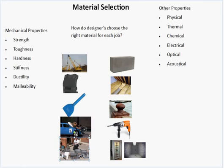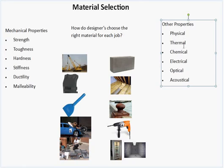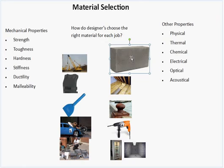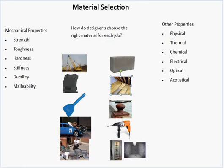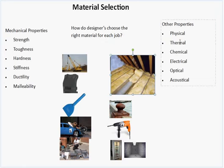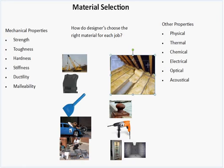Beyond mechanical properties, there are other properties to consider when choosing a material. You have a physical need for a building block that doesn't collapse, fracture, or crack under massive loads, but there are other properties too. A good one to consider for environmental reasons is the thermal properties of the material — whether you want it to be a heat insulator. Loft insulation is a good example of a material chosen for its thermal retention capabilities.